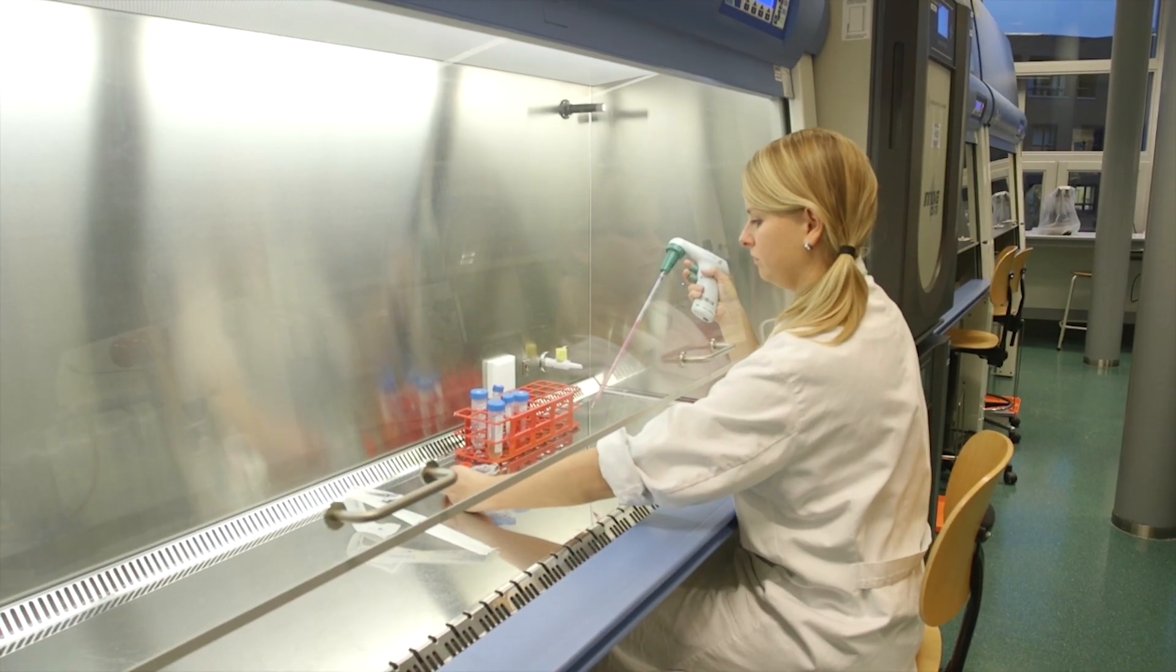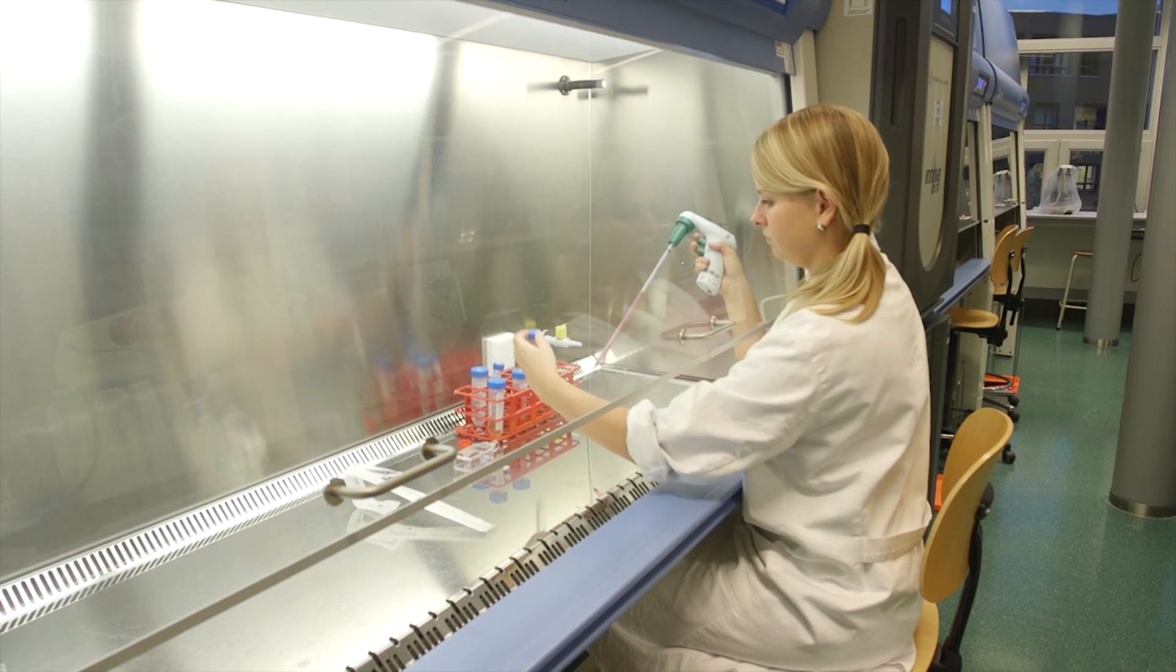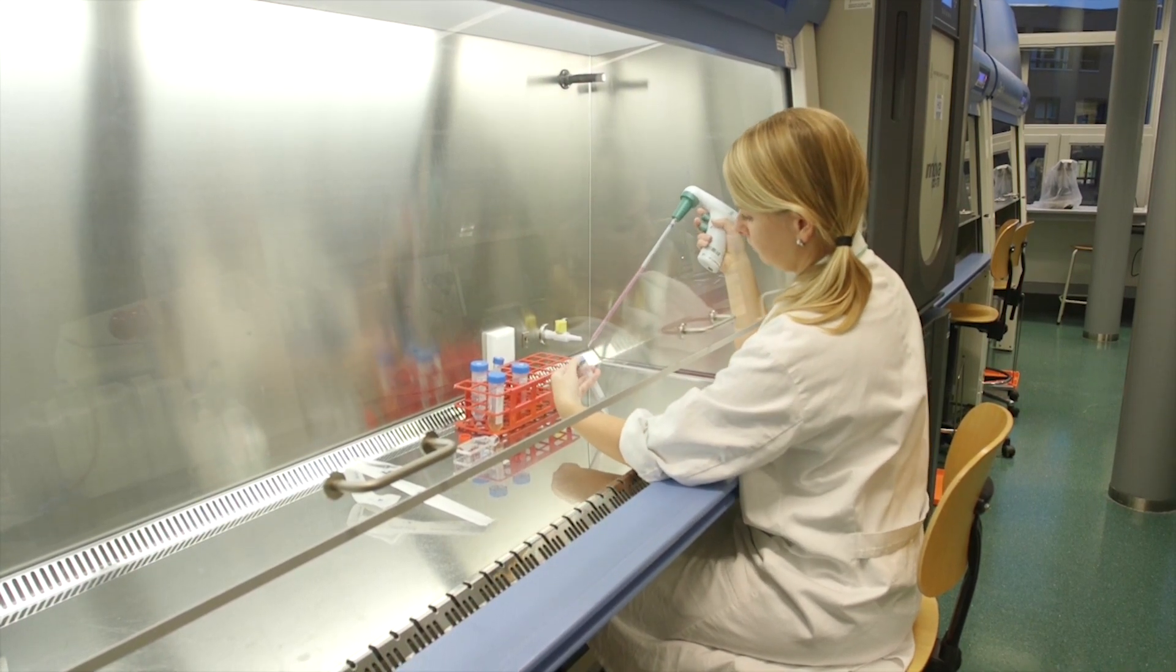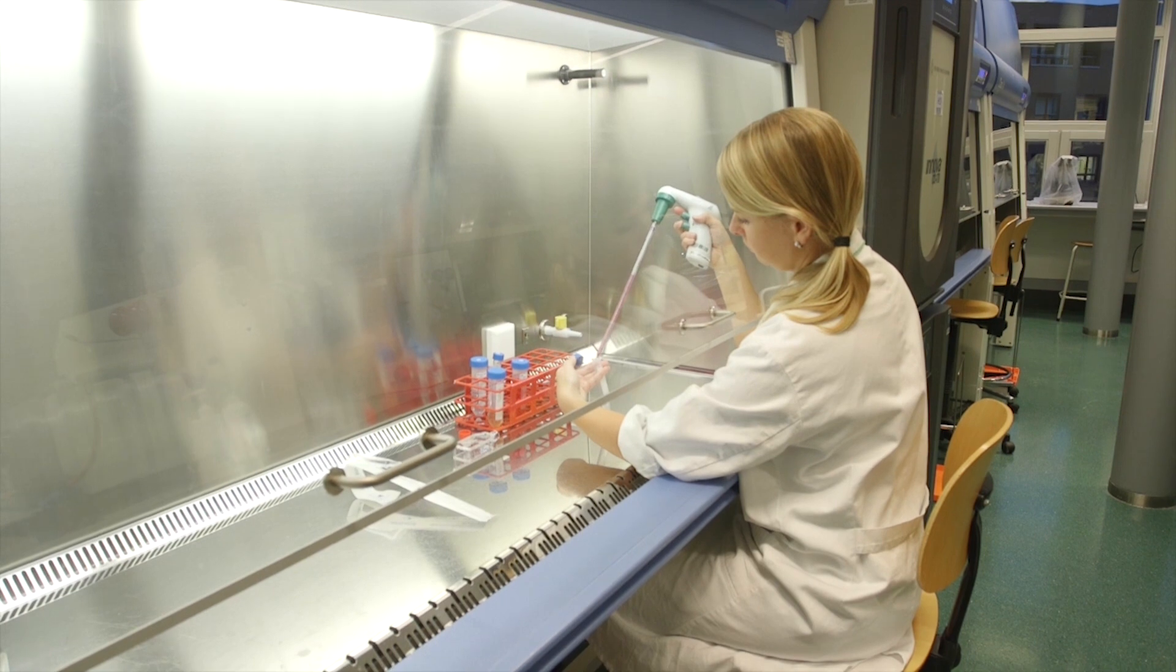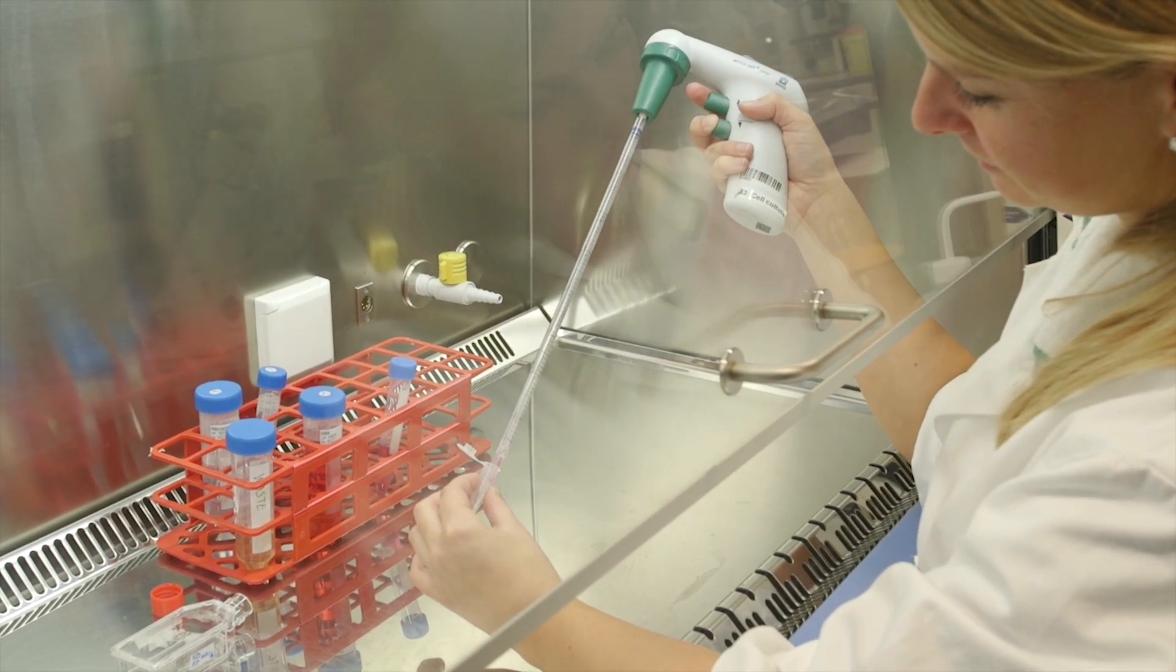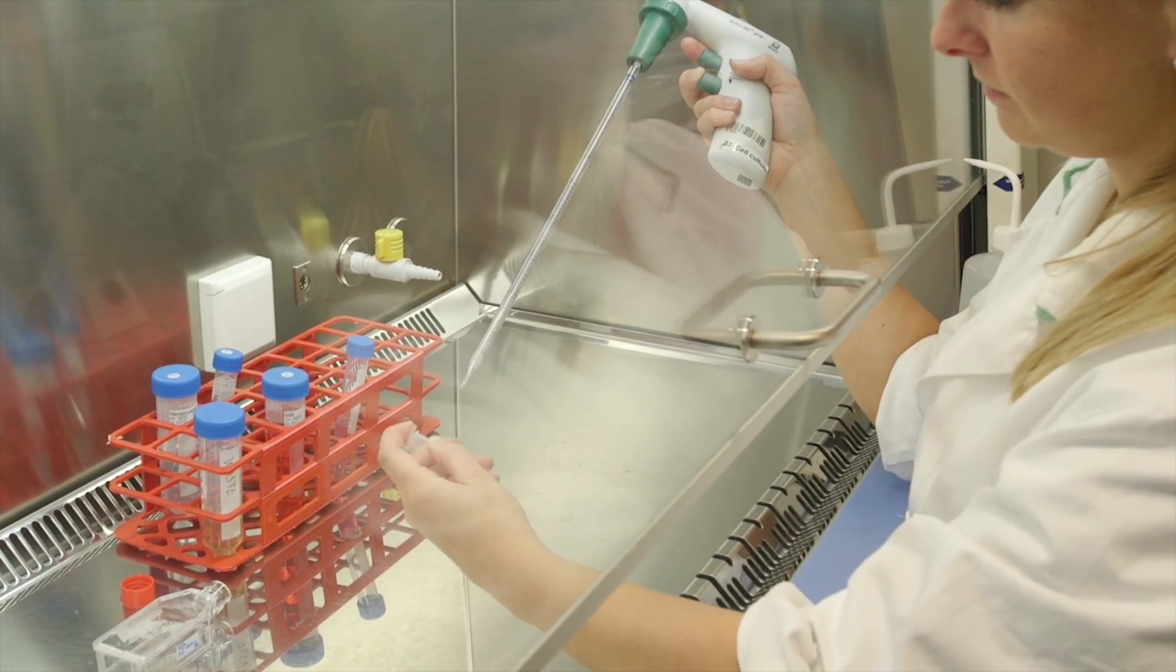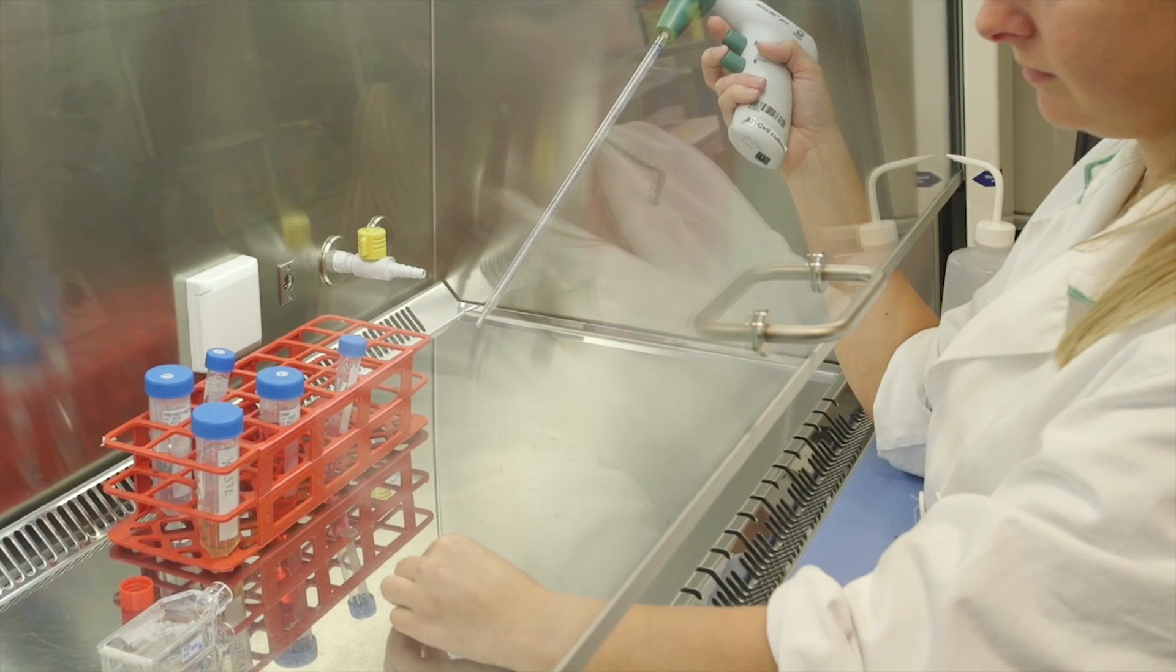When your cells are resuspended, transfer them temporarily to a 15 ml falcon tube. This is to prevent the cells from attaching to the culture flask again before you have passaged them. A small volume of the cell suspension is transferred to a non-sterile eppendorf tube. This eppendorf is taken out of the flow cabinet to determine the concentration of the cell suspension.